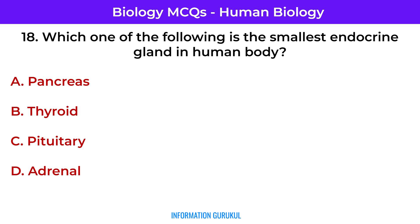Which one of the following is the smallest endocrine gland in the human body? Pituitary.